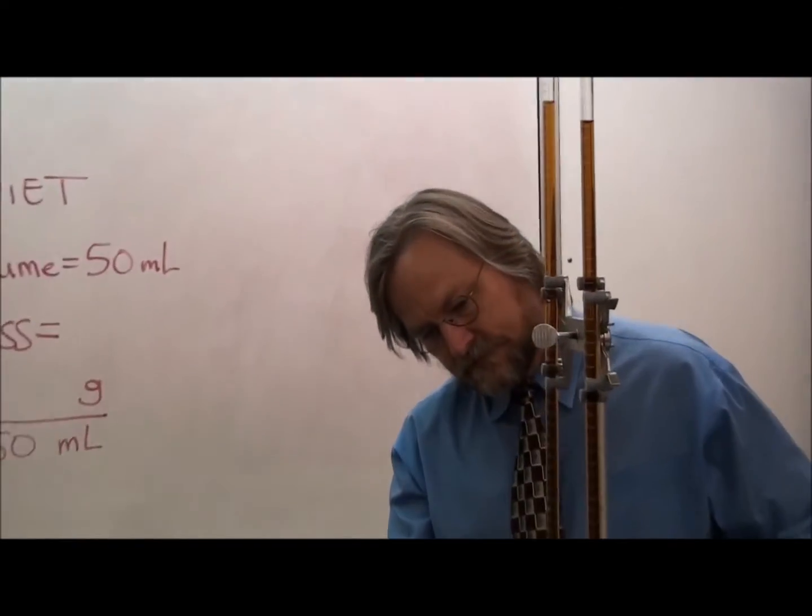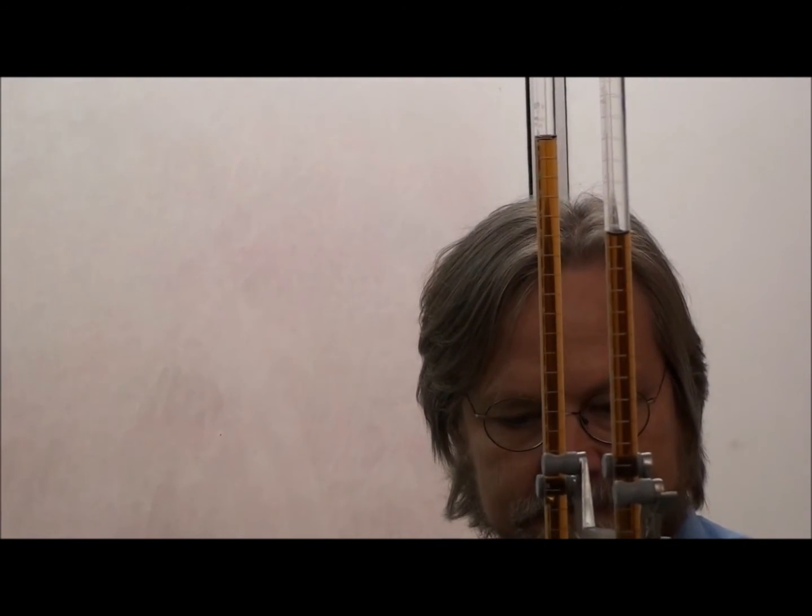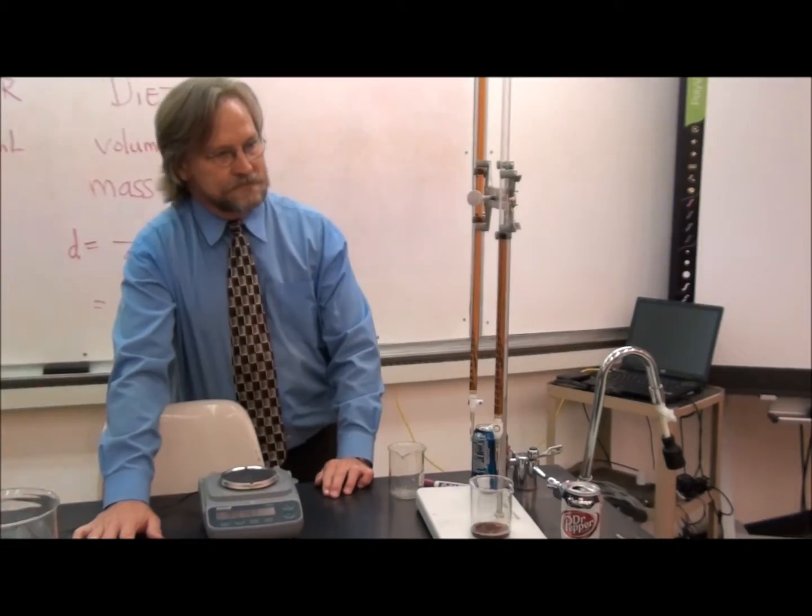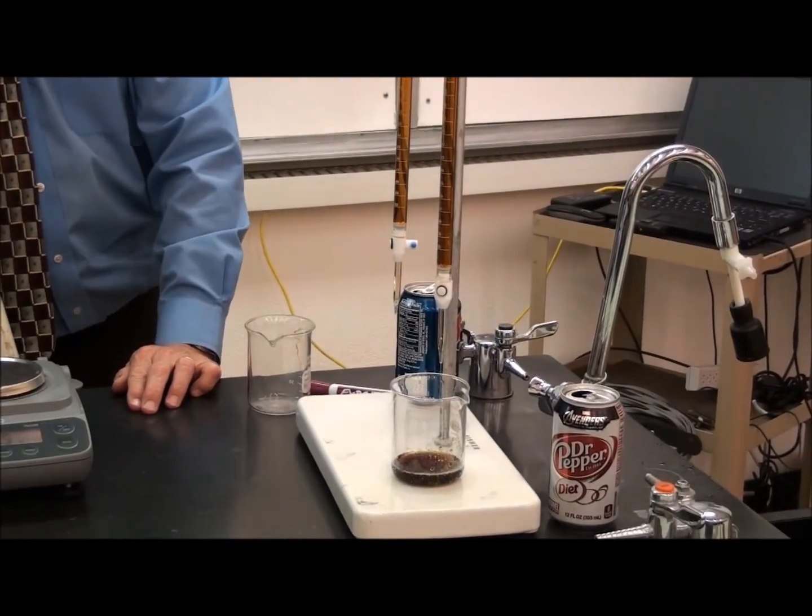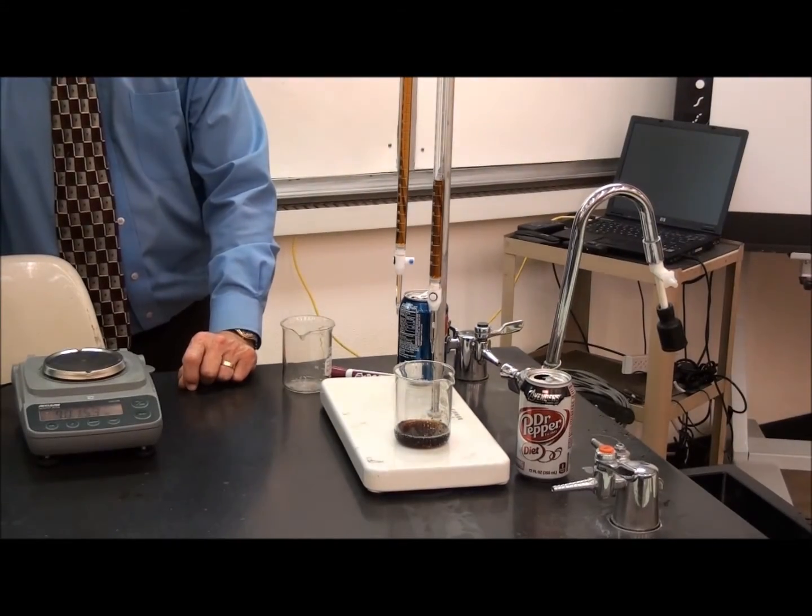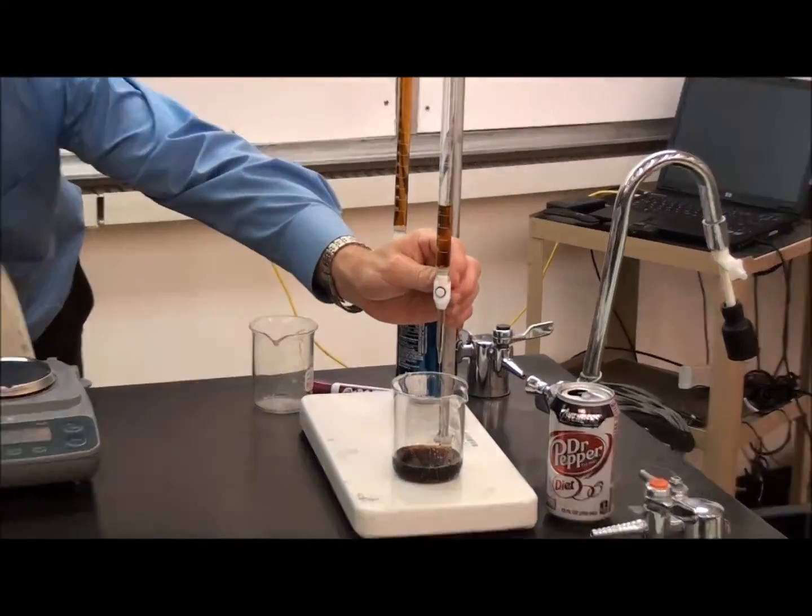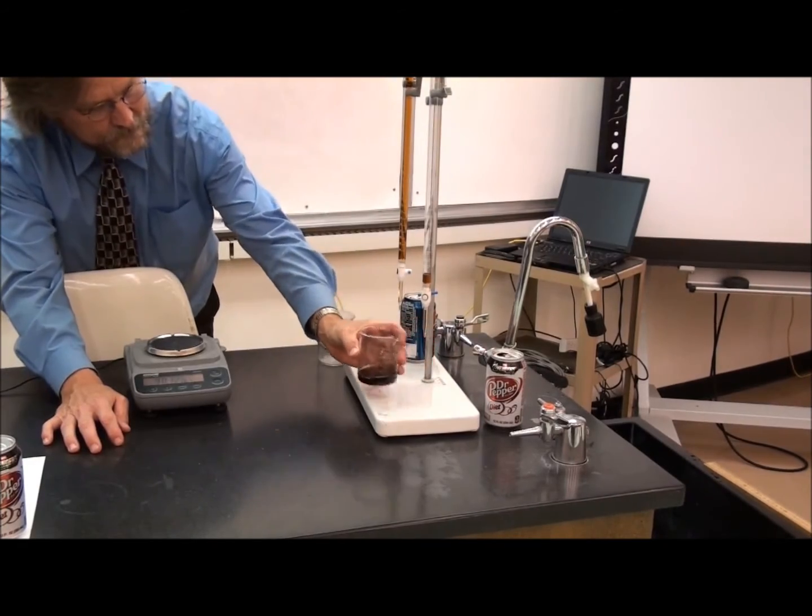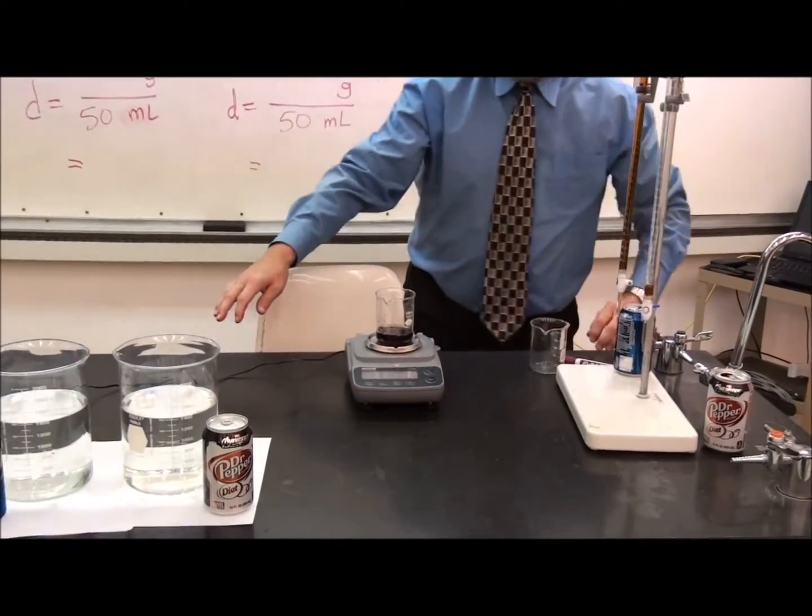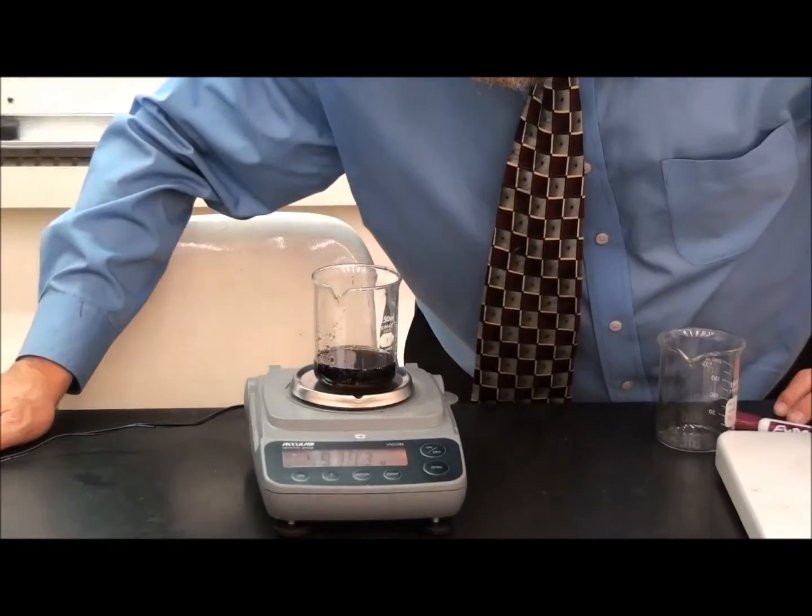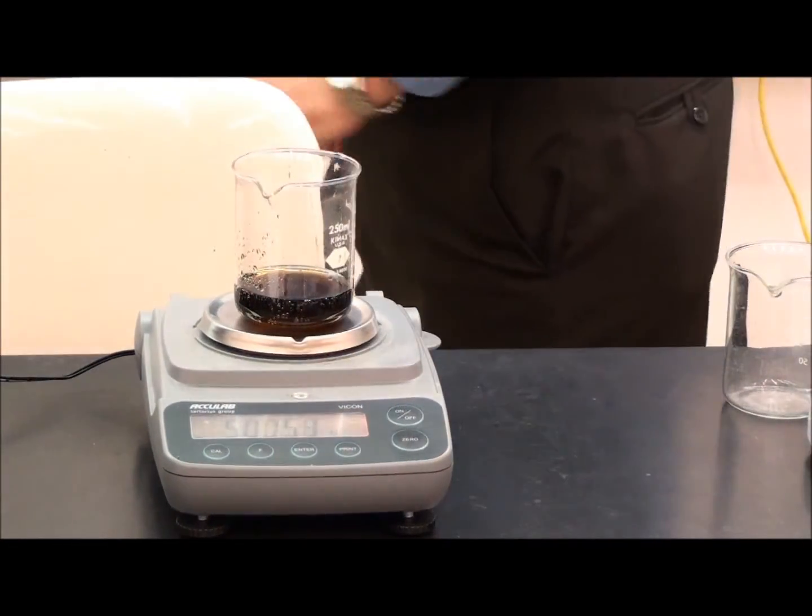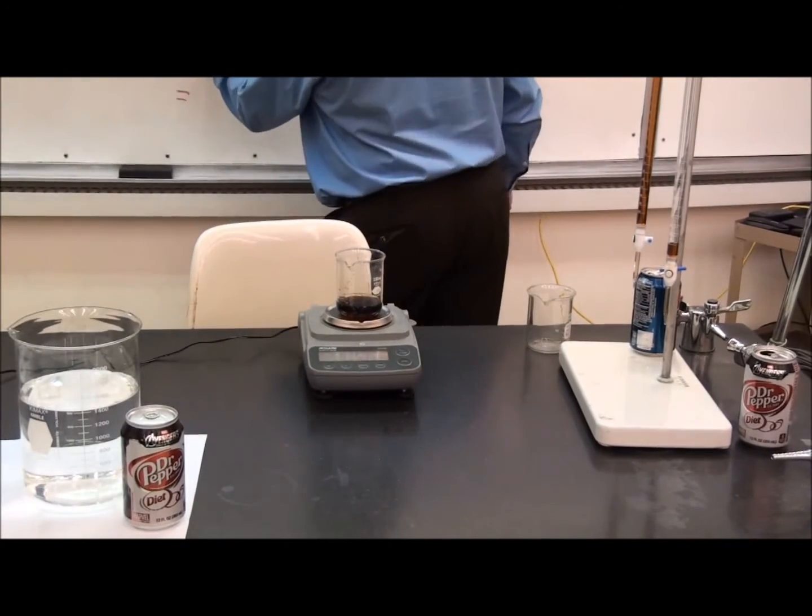Because we don't want to be around all day, we are speeding this up to 8 times normal speed. Even at this fast speed, it takes a while to dispense 50 milliliters of Diet Dr. Pepper. Dr. Schubert stops the flow, gets the last drop from the tip, and determines the mass. We see the mass is 50.03 grams. He records that on the dry erase board for later use.